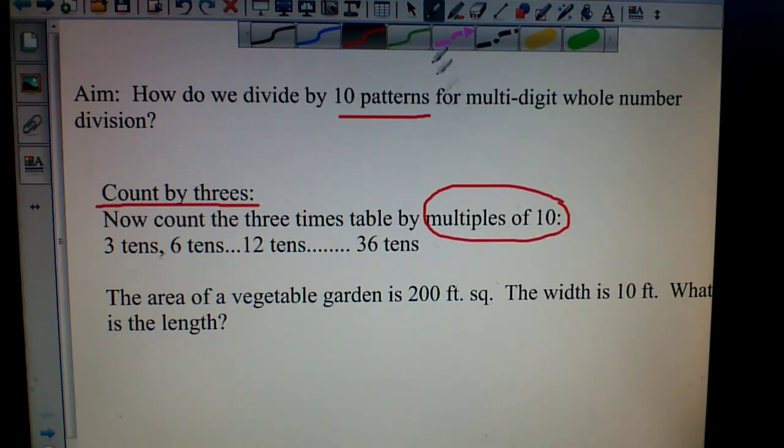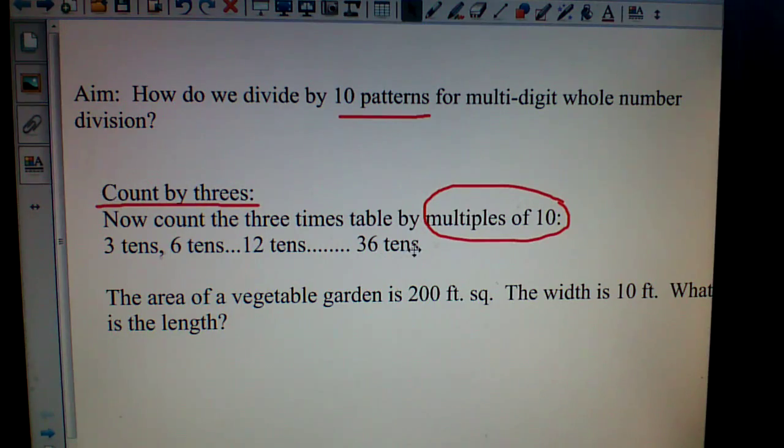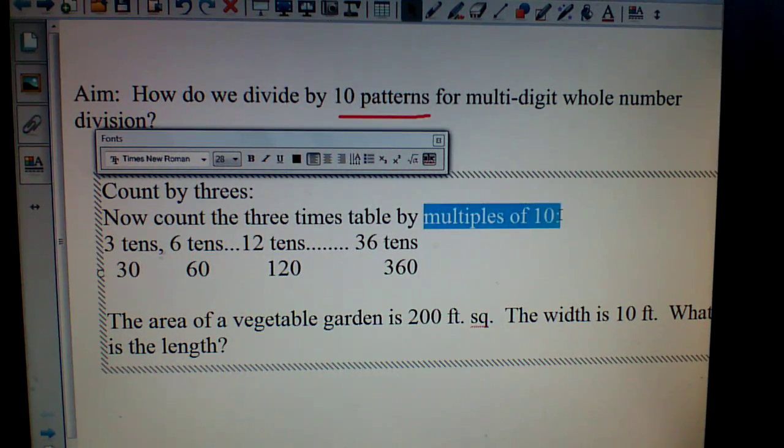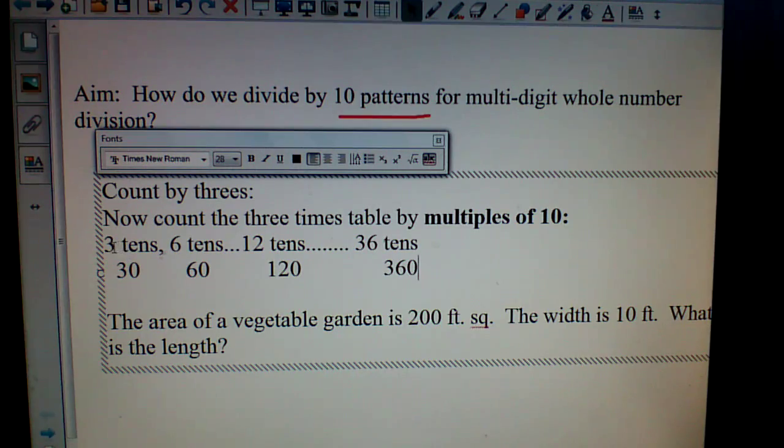Okay, we're back here with the multiples of 10. So if you were to look at these numbers in standard form, what would they look like? Well, 3 tens would be 30, 6 tens would be 60, 12 tens would be 120, and 36 tens would be 360. So I basically took the three times table, counted as multiples of 10, put them in unit form, and then turned them into standard form.